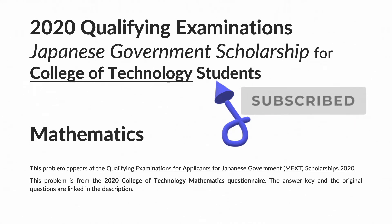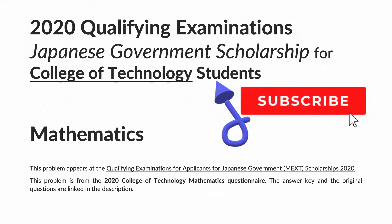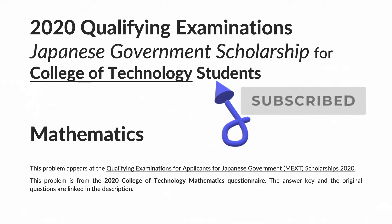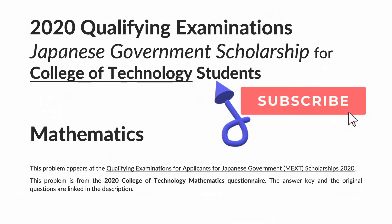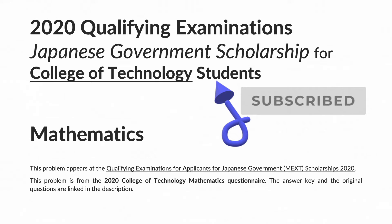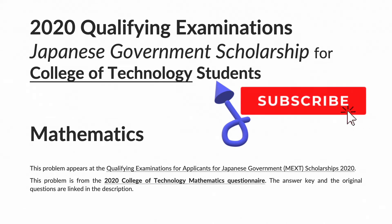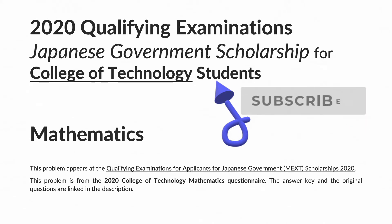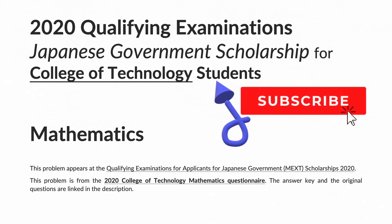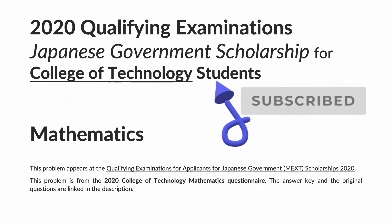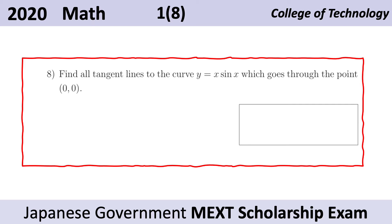Please hit subscribe. This problem appears at the qualifying examinations for applicants for Japanese government or MEXT scholarships 2020. This problem is from the 2020 College of Technology Mathematics questionnaire. The answer key and the original questions are linked in the description. Find all the tangent lines to the curve y equals x sine x which goes through the point zero zero.